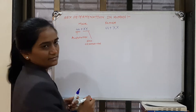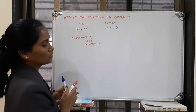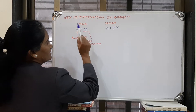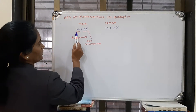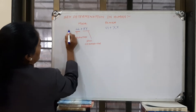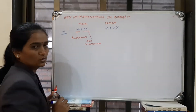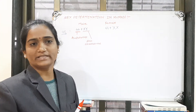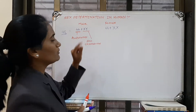In males, there are 44 autosomes and one X and one Y chromosome — making 44 plus 2, totaling 46 chromosomes. This is the genotype of the male.